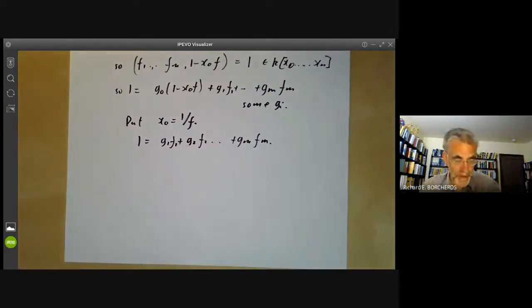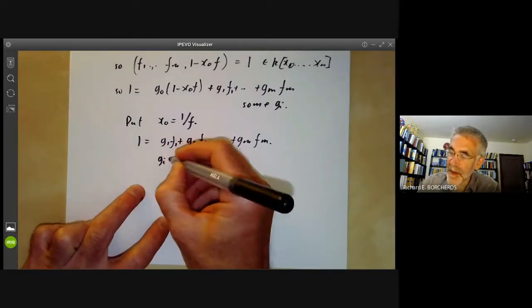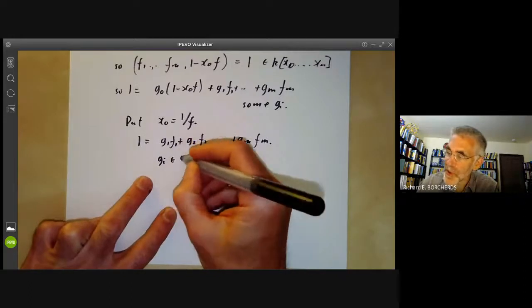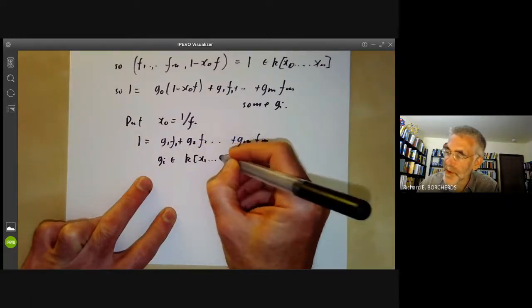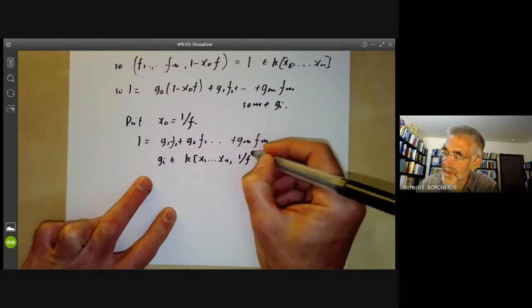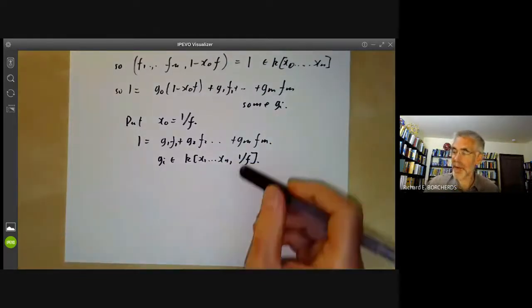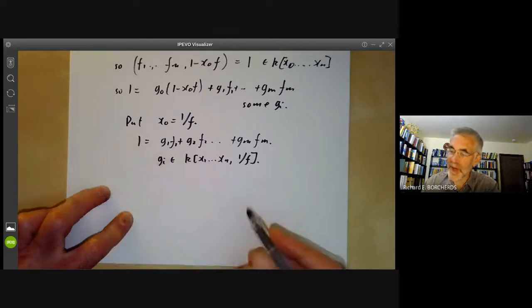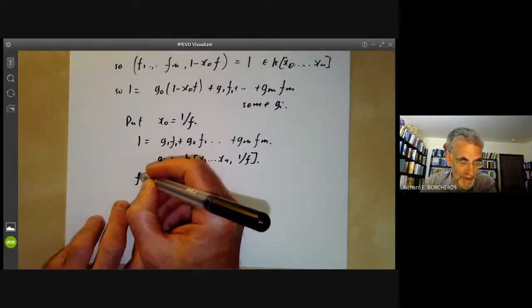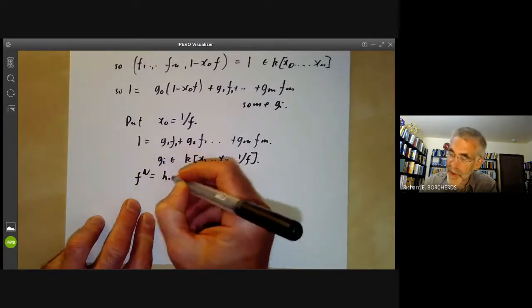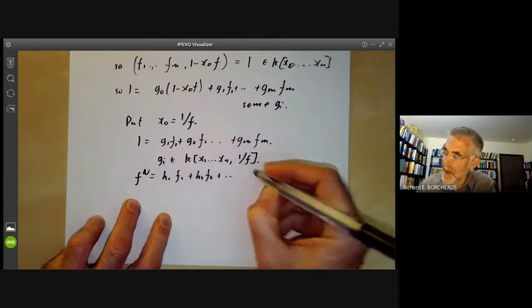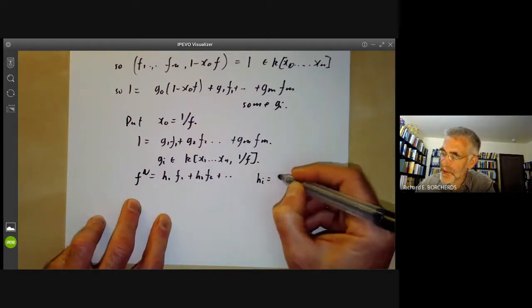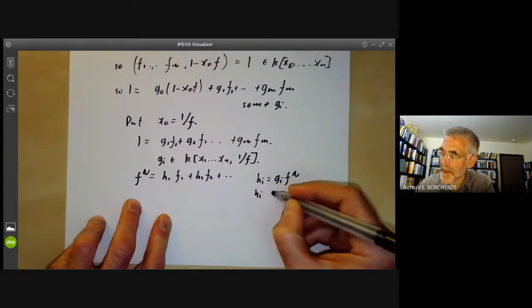So we find 1 is equal to g1·f1 plus g2·f2 plus... plus gm·fm. Where now, all the elements gi are, they're not quite in the ring of polynomials from x1 up to xn, because they might also involve 1/f. So they're actually rational functions with denominators that can be written as powers of f. Now, since each of these is rational functions with denominators of power of f, we can just clear denominators by multiplying by a high power of f. So we find f^n is equal to h1·f1 plus h2·f2 and so on, where each hi is equal to gi times f^n, and the hi are polynomials.